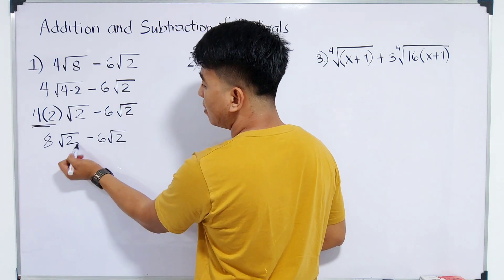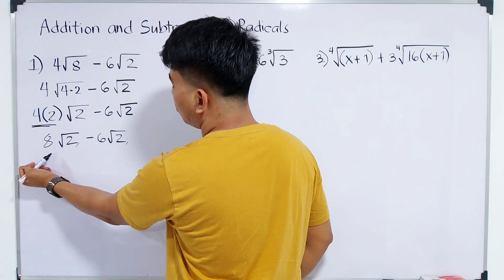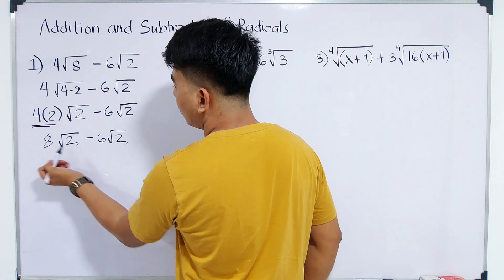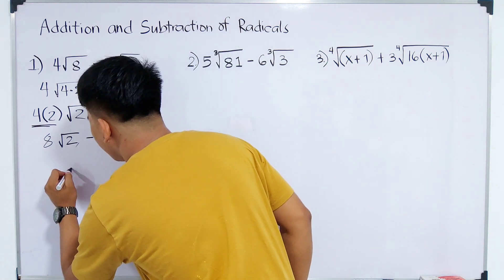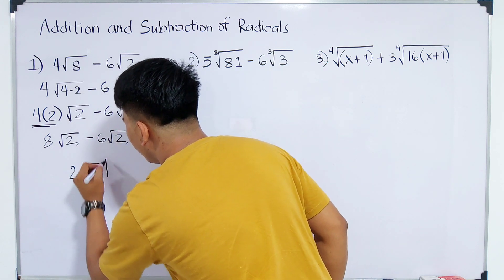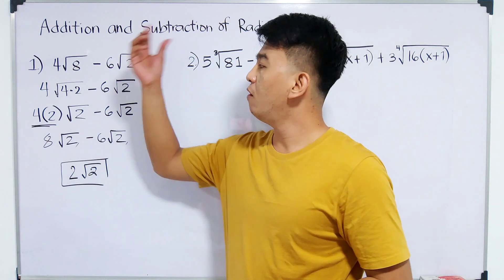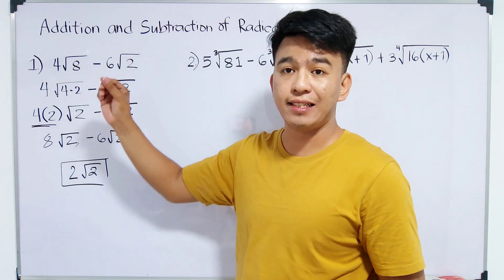And since the radicands are now the same, which is 2 and 2, we will subtract 8 and 6. So 8 minus 6 is 2. So your final answer is 2 square root of 2. This is the simplified form or the difference between 4 square root of 8 and 6 square root of 2.